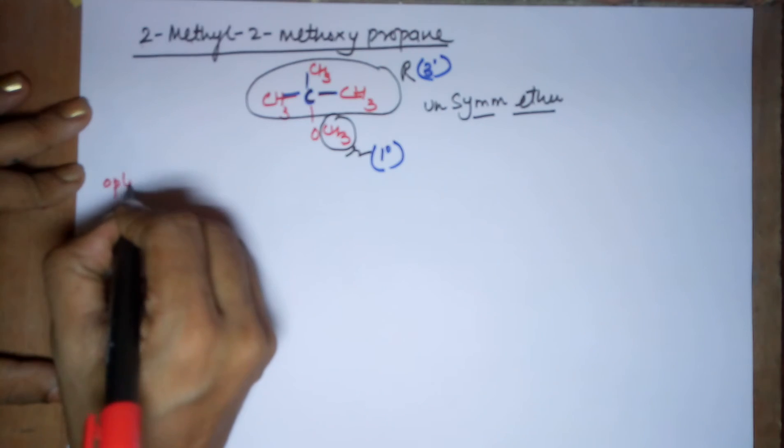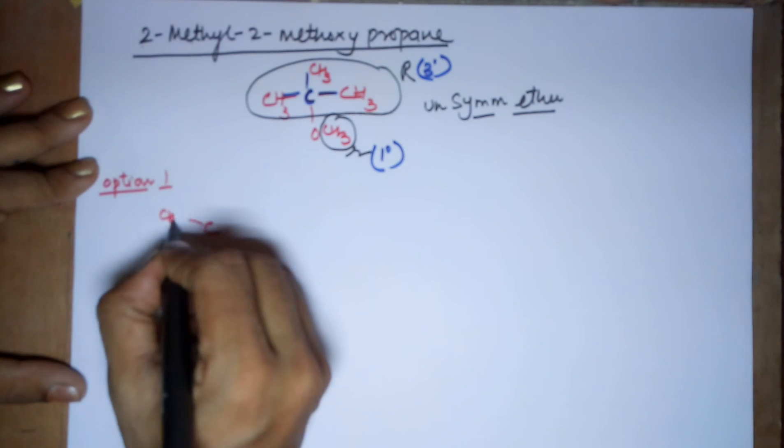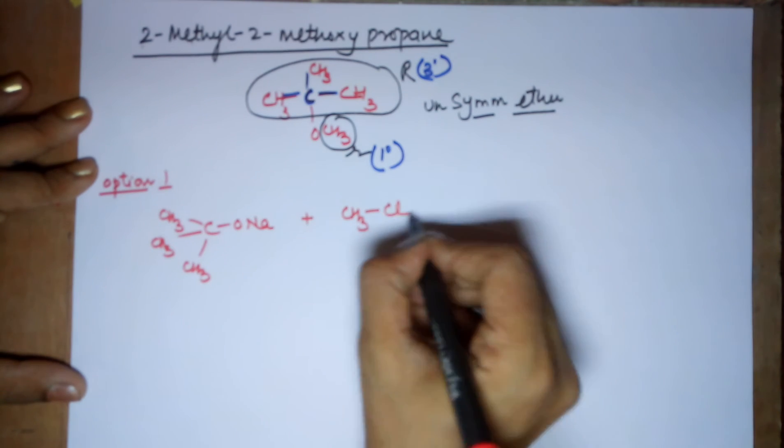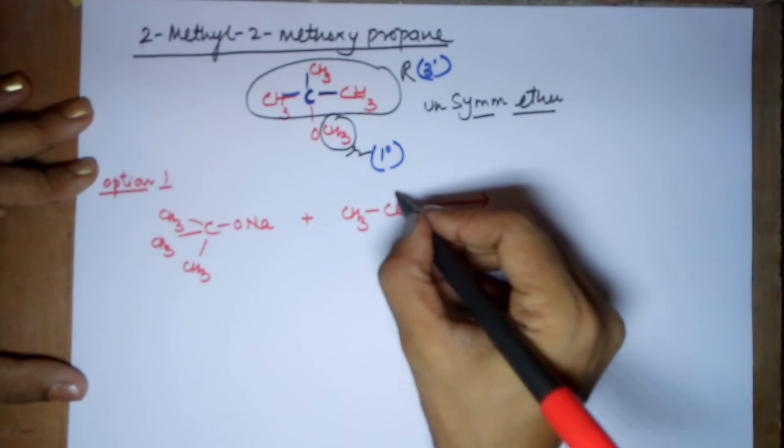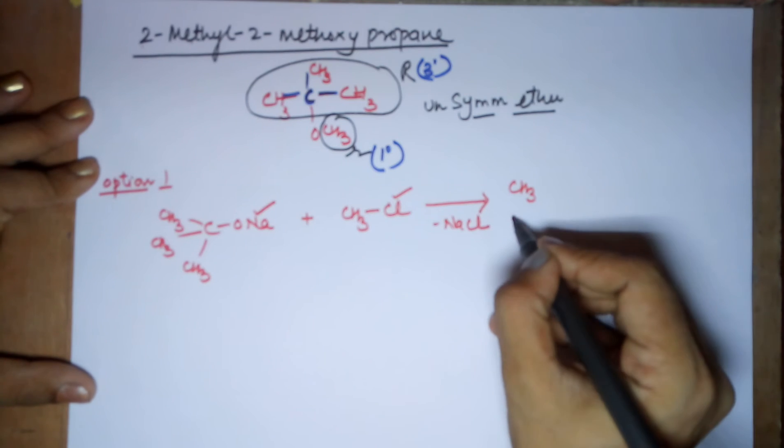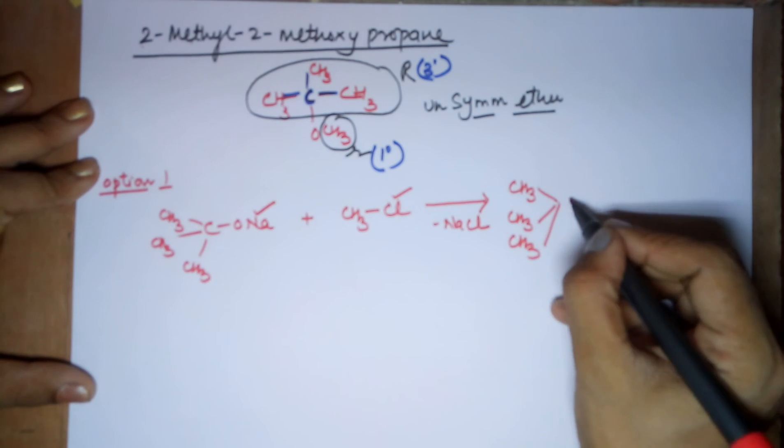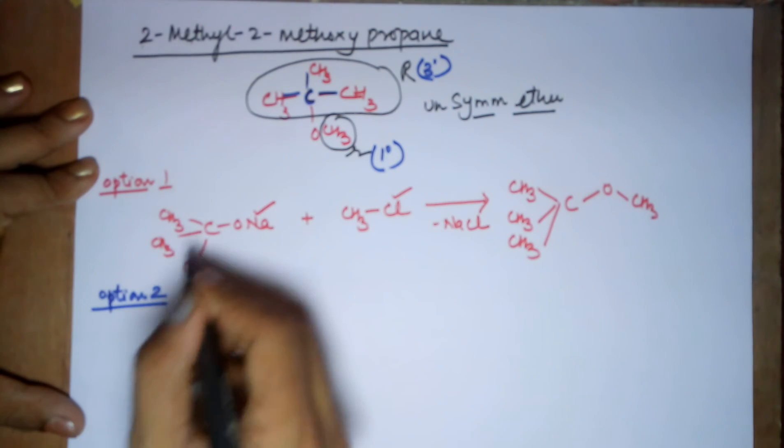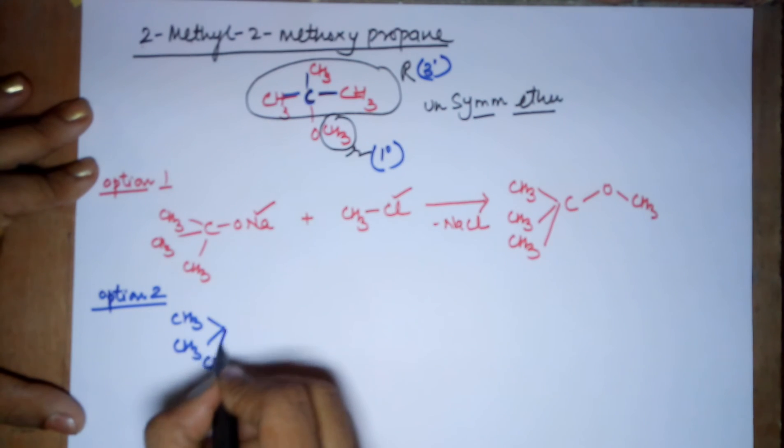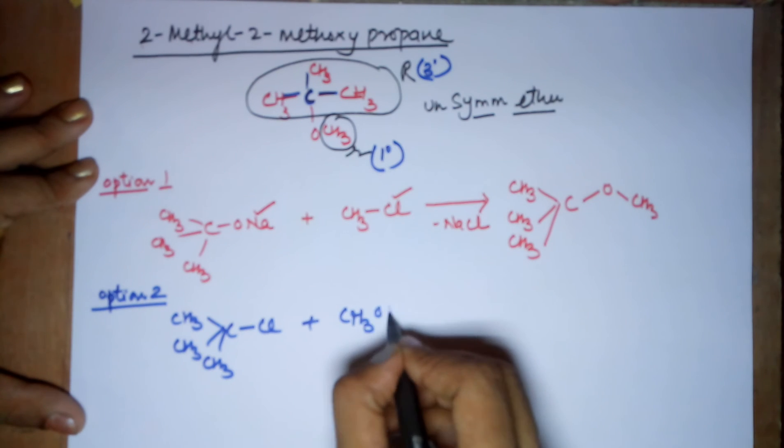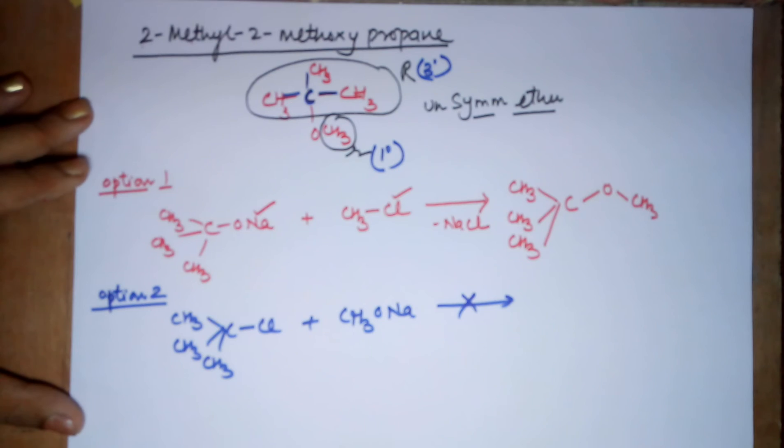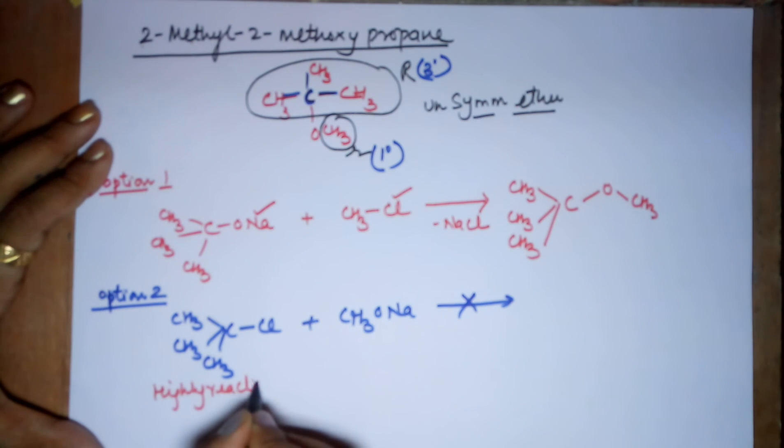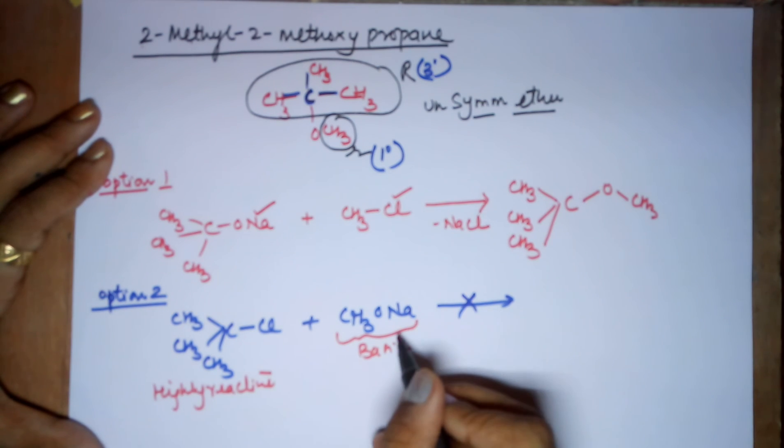Now, what are the options of this? I would be doing the options in this case, option 1. I would take the tertiary as the O-Na and the primary as the Cl. And I expect that NaCl would be lost and I would end up in the ether required. Now, what is the second option? In option 2, you could have used the halide from the 3 degree and O-Na from the 1 degree. Now, this does not give you an ether. Why so? This is 3 degree halide and it is highly reactive. This is O-Na. This is basic in nature.